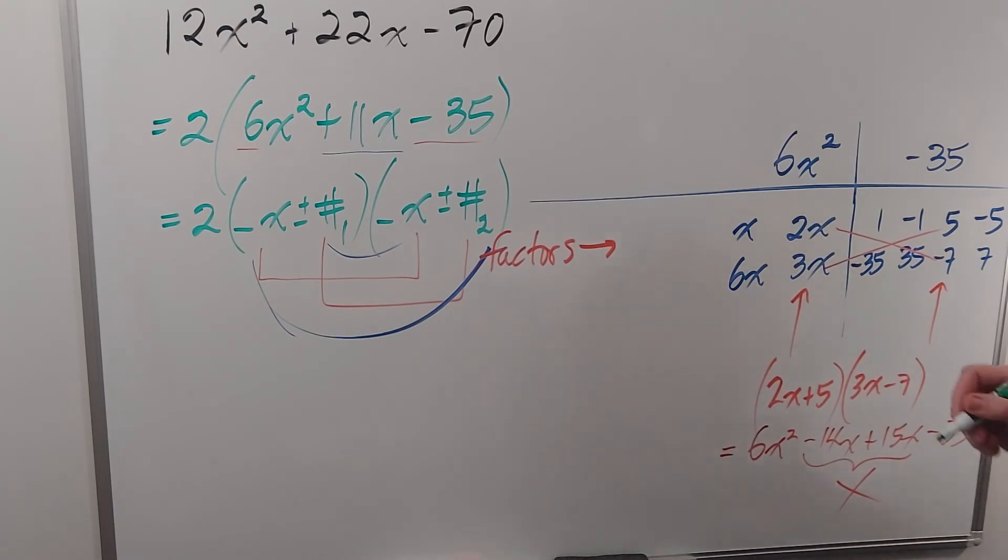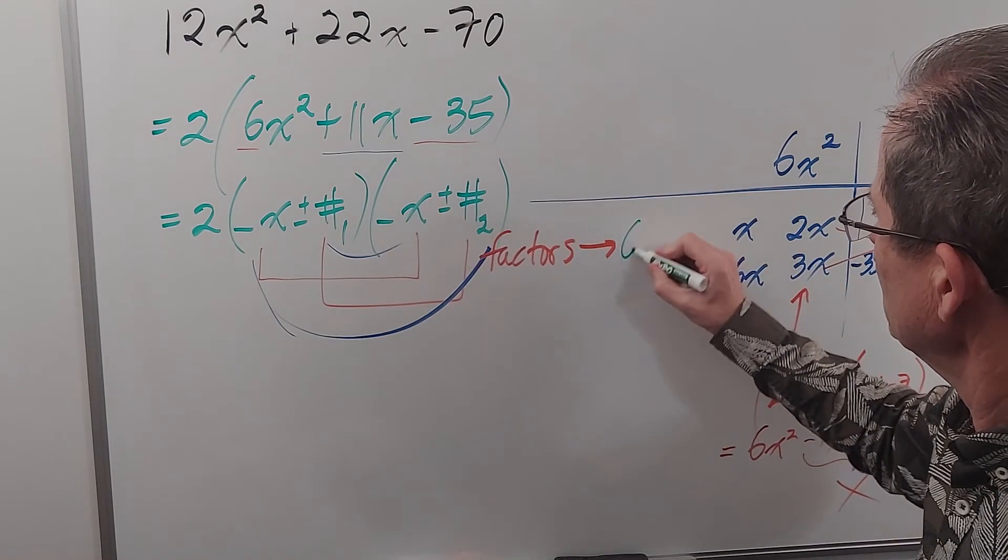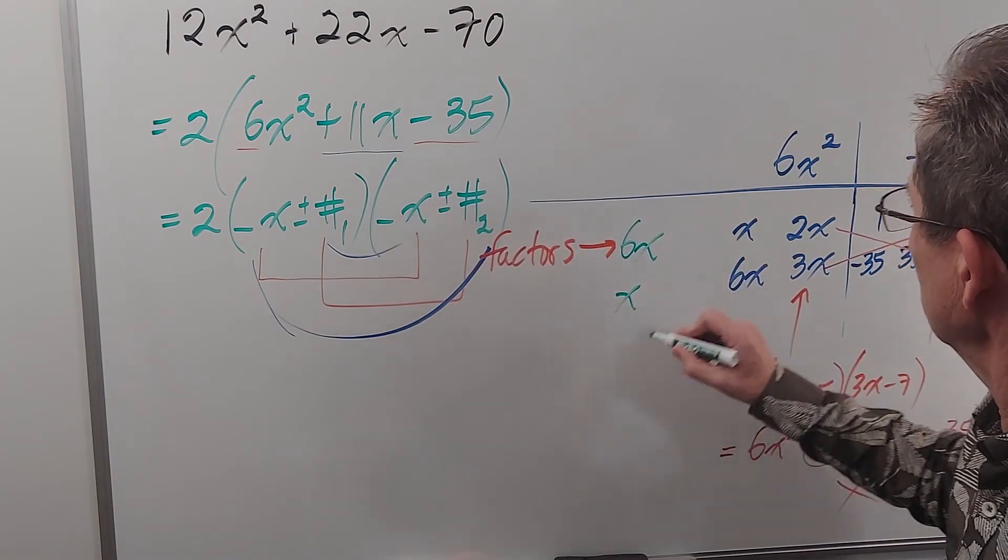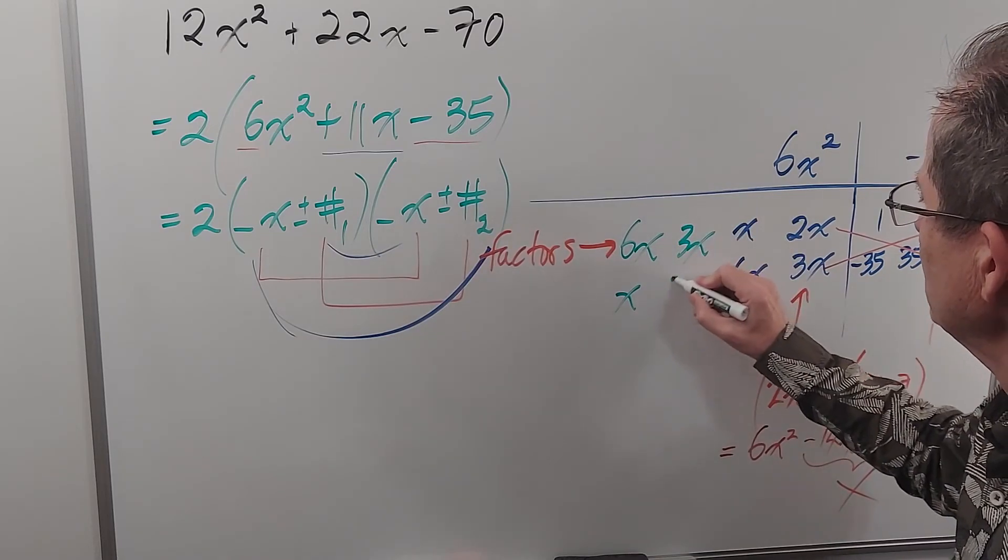Now these aren't all the possibilities either. I need to do one more thing because how do I know that the x goes or the 2x goes with the 5 or the 2x goes with the negative 7. So I need to flip either these or these. It's easier to flip those. There's only two of them. So if I flip those I'm going to get more possibilities, the rest of the possibilities.